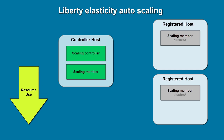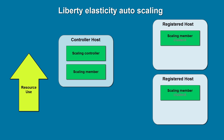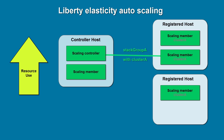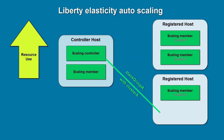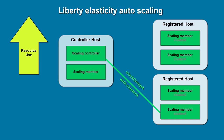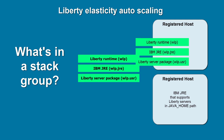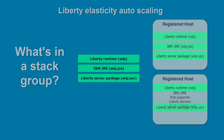This gives you greater capacity to handle spikes in resource demand. A scaling controller provisions a stack group of Liberty software to hosts registered with the controller when resource use goes up, then stops or starts the provisioned cluster member servers and their applications in response to resource demands. You determine what Liberty software needs to be in a stack group based on what Liberty software is available on a registered host.